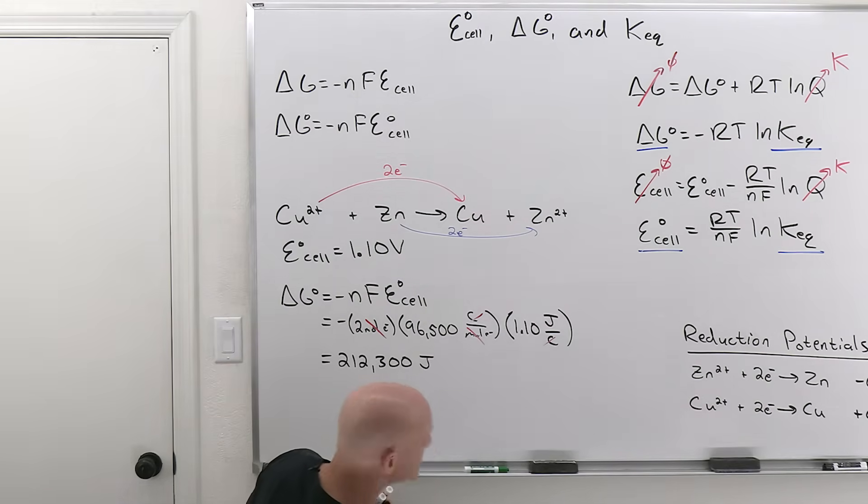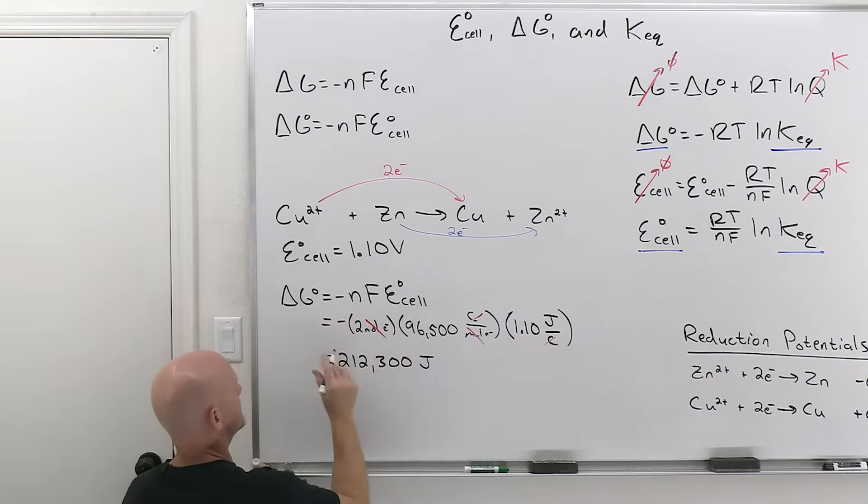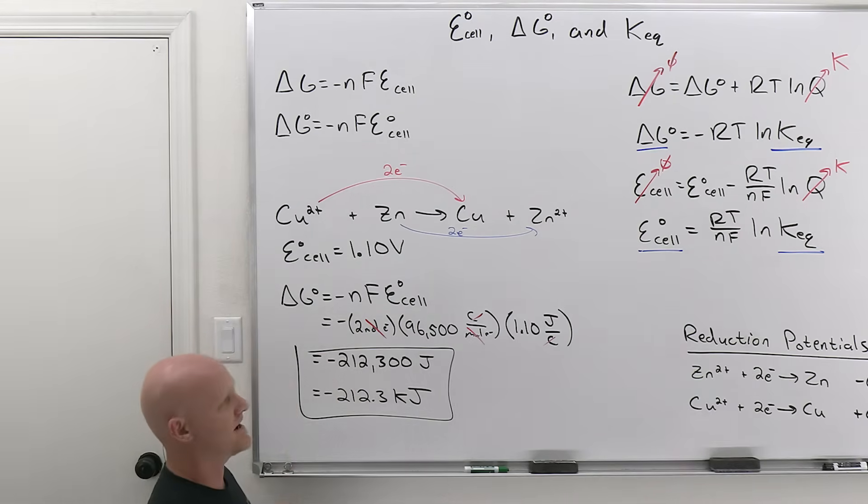I must have lost a negative sign. I lost my negative sign on the front. Well, let's try that again. So negative 212,300. Notice we should have expected it to come out negative. And if we divide by a thousand to convert to kilojoules, then negative 212.3 kilojoules. So there's your delta G standard.